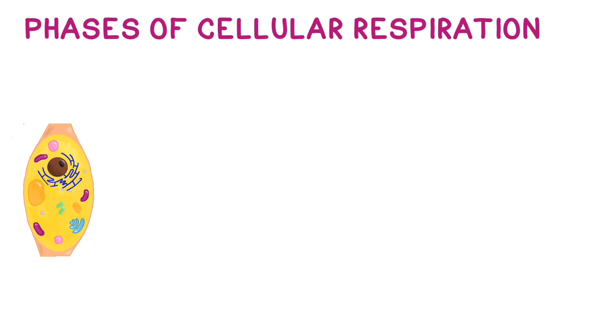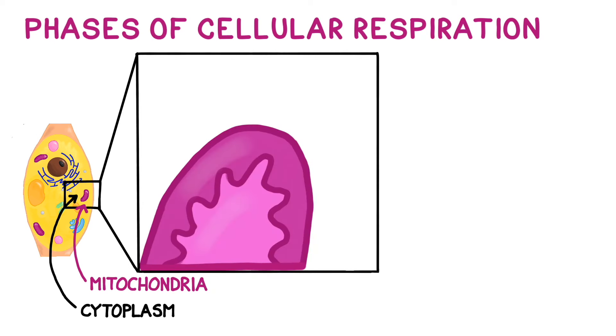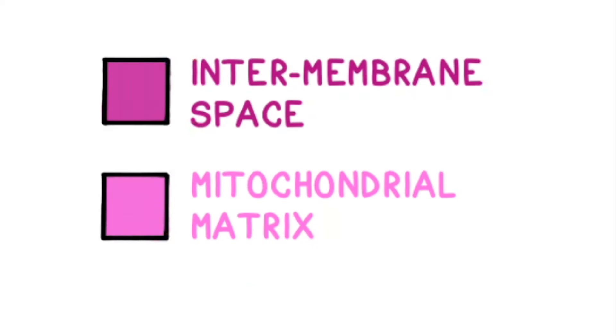In eukaryotes, respiration takes place in the cytoplasm and in the mitochondria. The mitochondria have inner and outer compartments, and a portion of cellular respiration takes place in each one. The outer compartment is called the intermembrane space, and the inner compartment is called the matrix.